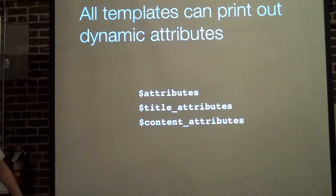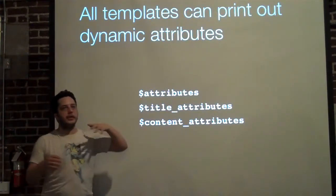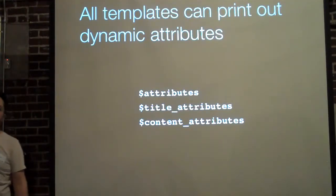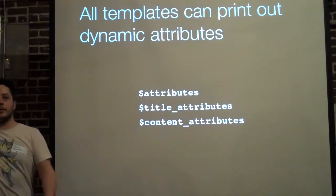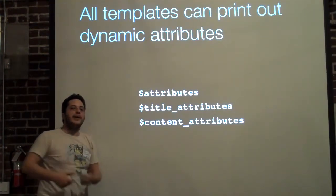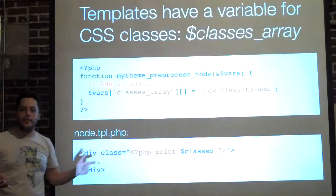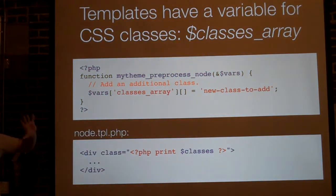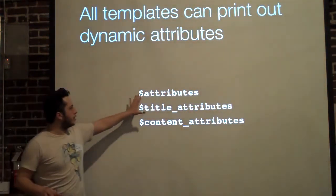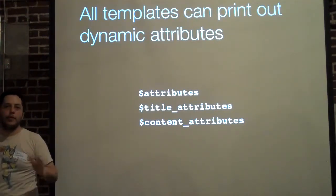All templates can now print out dynamic attributes. When you have an HTML tag like a div, you have the ID attribute, the class attribute, and anything else that might appear in the div. Now through code we can collectively add different attributes. By default, the templates have to have ID and class established — that's why classes_array exists. But any other attribute for a tag can be pushed through the attributes variable, and if it's specific to content or title, they have their own attributes array.